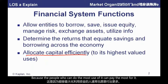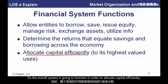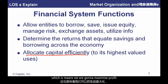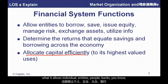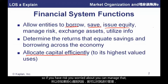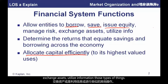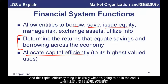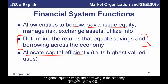Capital flows to its highest and best use because the people who can do the most with it can pay the most for it. So the overall system functions to allocate capital efficiently, which means we maximize profit and hopefully output as well. In practical terms, it allows individual entities — people, banks, any market player — to borrow capital, save, issue equity, manage risks, put risk off to somebody else, find offsetting contracts, exchange assets, and utilize information. This capital efficiency ultimately equates savings and borrowing in an economy — S equals I.